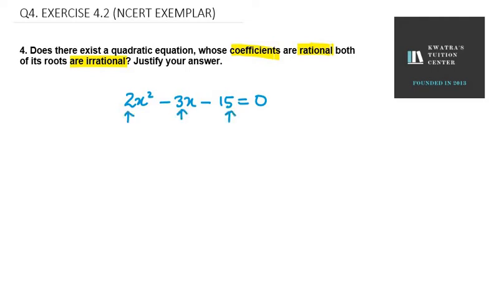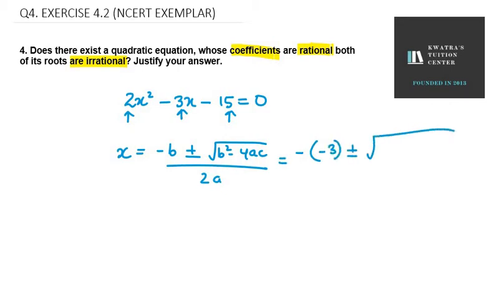Now what do we do? We take roots. How do we take roots? x equals -b ± √(b² - 4ac) / 2a. Minus b, b value is -3 ± √(b²). b² is (-3)² - 4ac. a is 2,